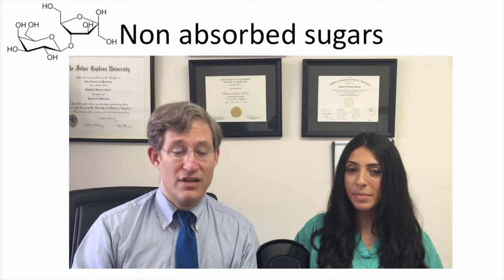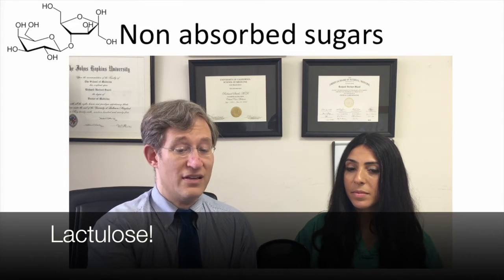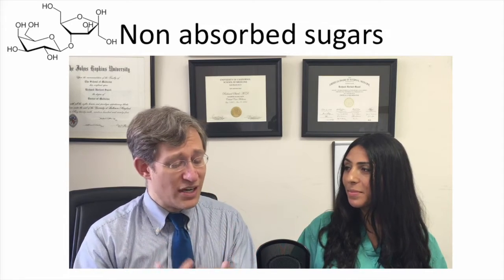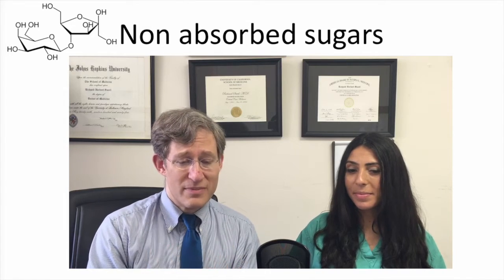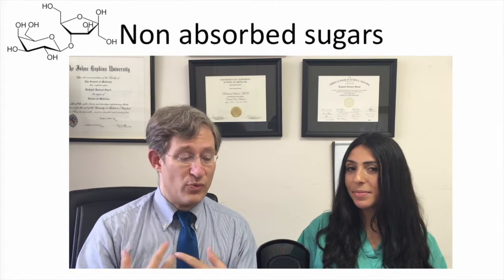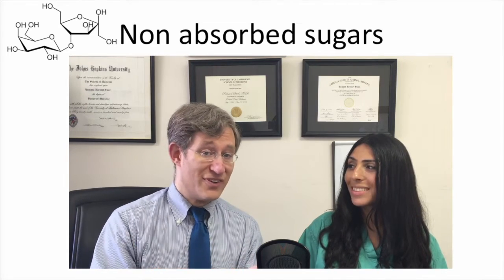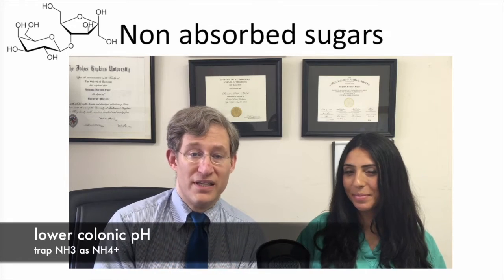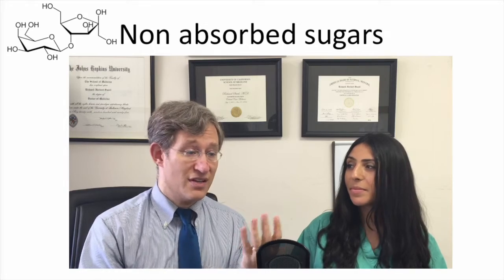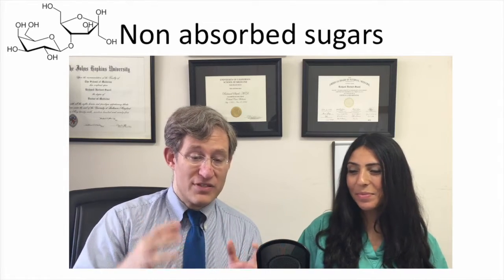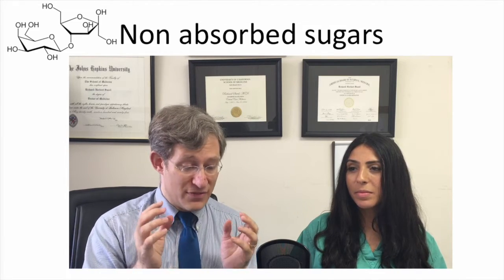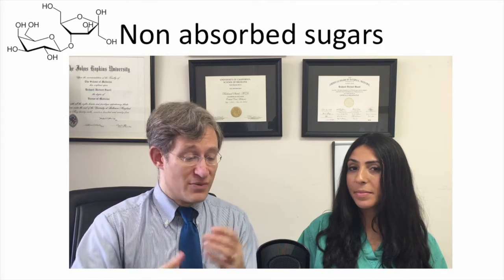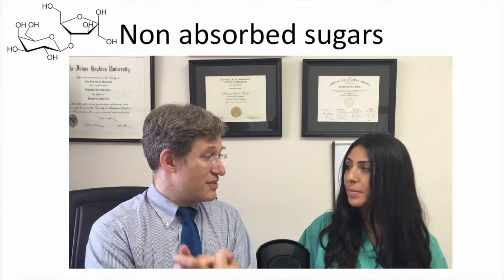The first is non-absorbed sugars — in this country, it's lactulose. The mechanism: it's a sugar we can't break down, but bacteria break it down and decrease the colonic pH. That decreased colonic pH converts ammonia back into ammonium, NH4+, which is trapped in the colon and passed in the stool. The patient needs three to four bowel movements per day as a way of titrating it. This is one way of decreasing the ammonia burden.